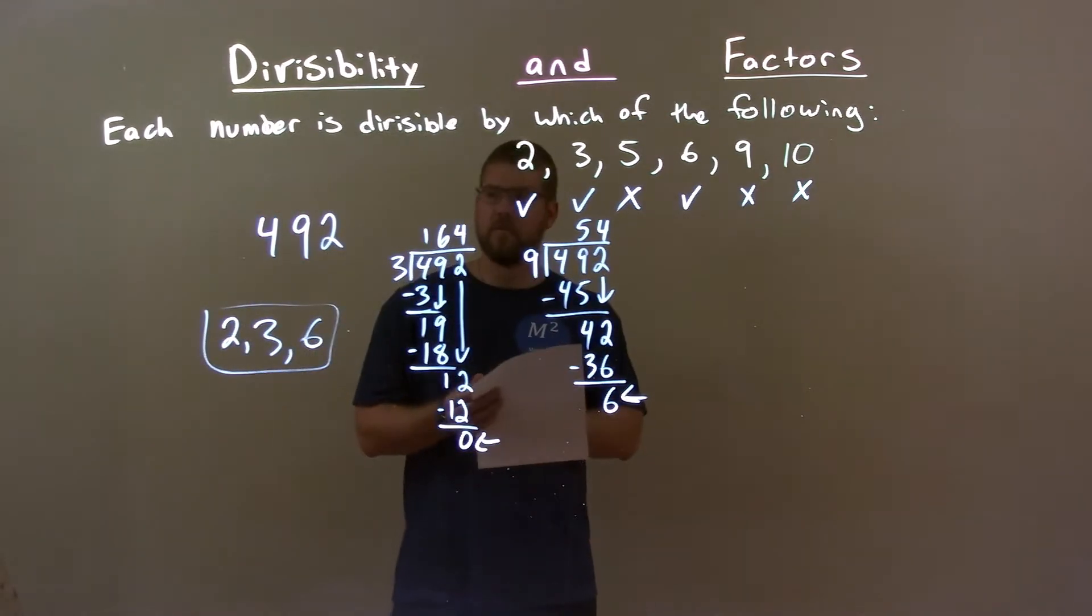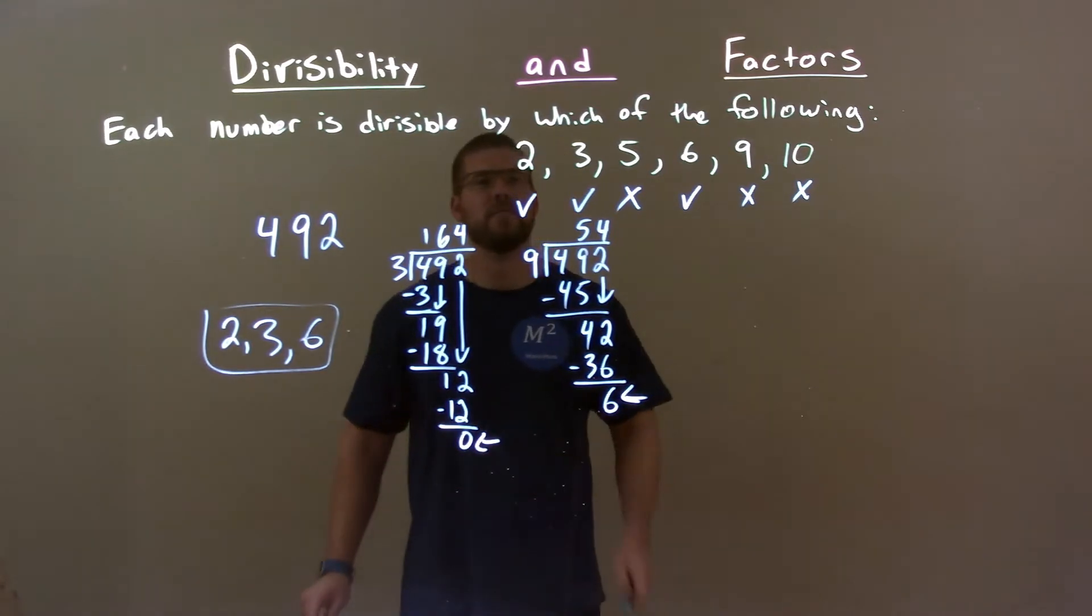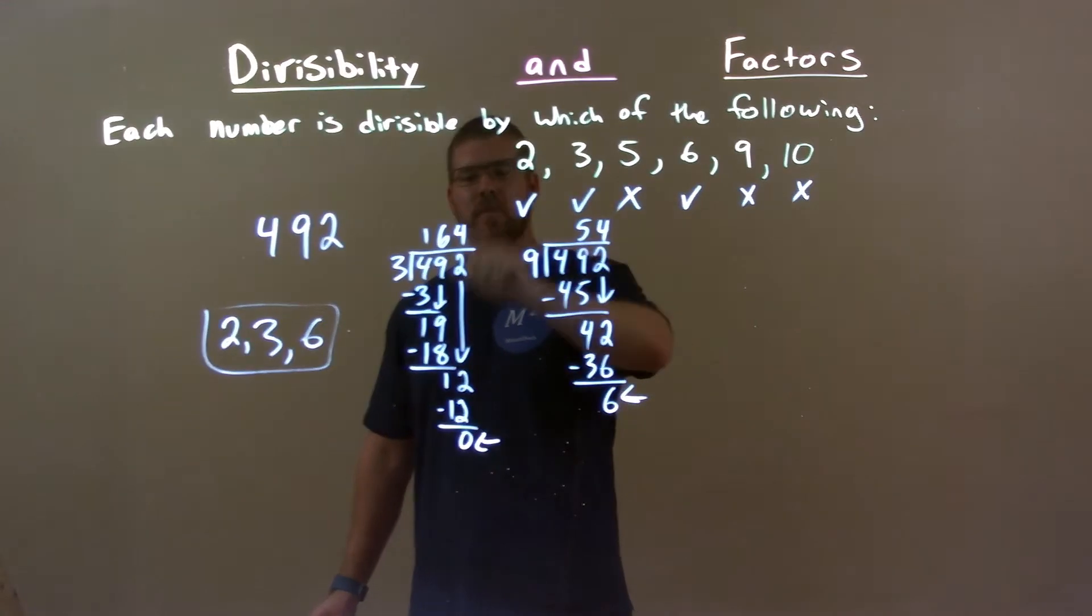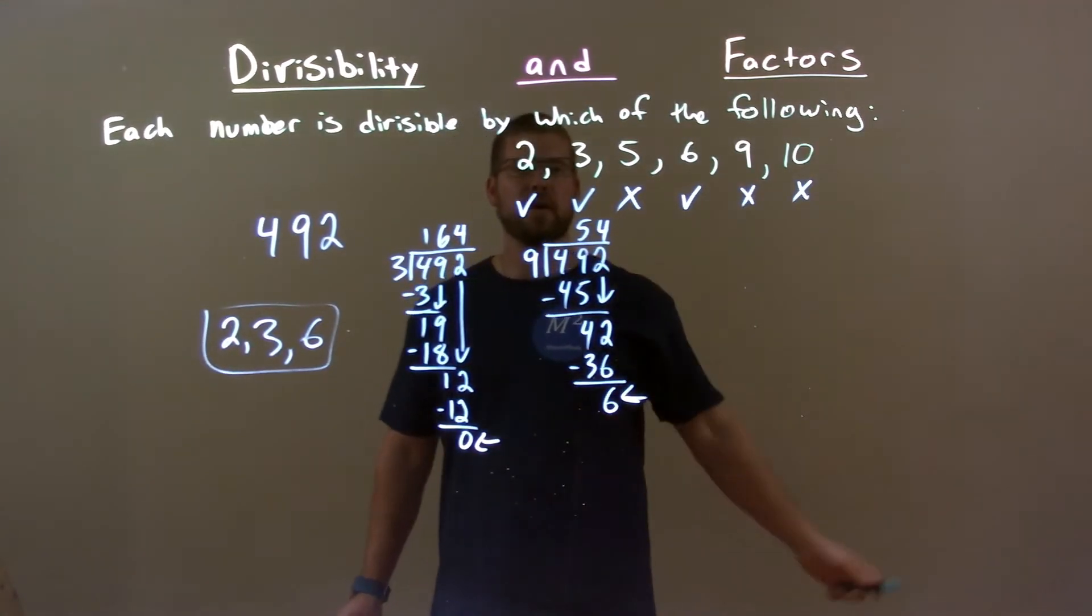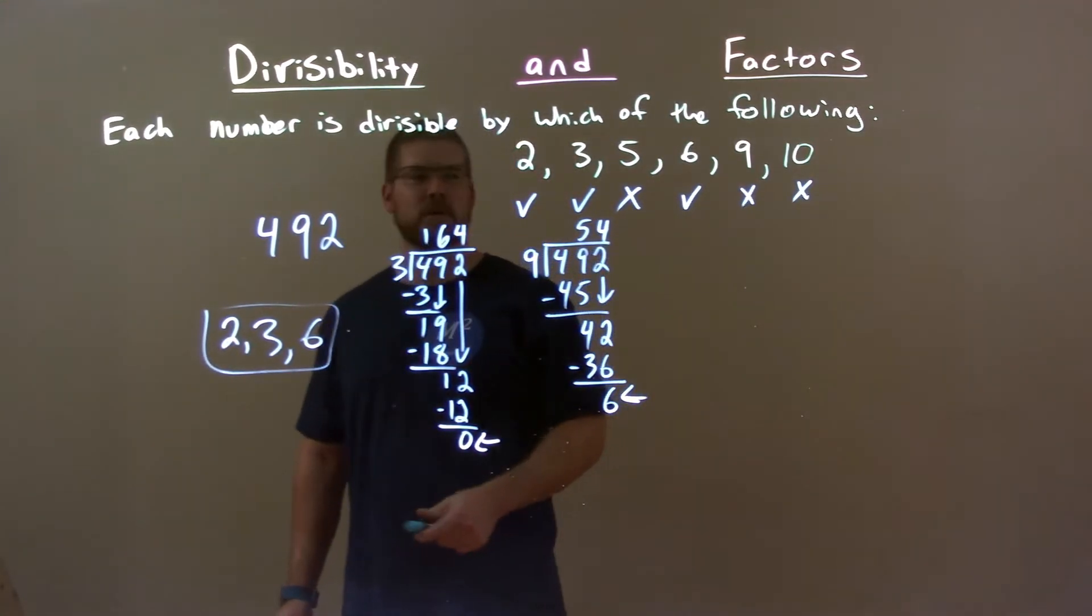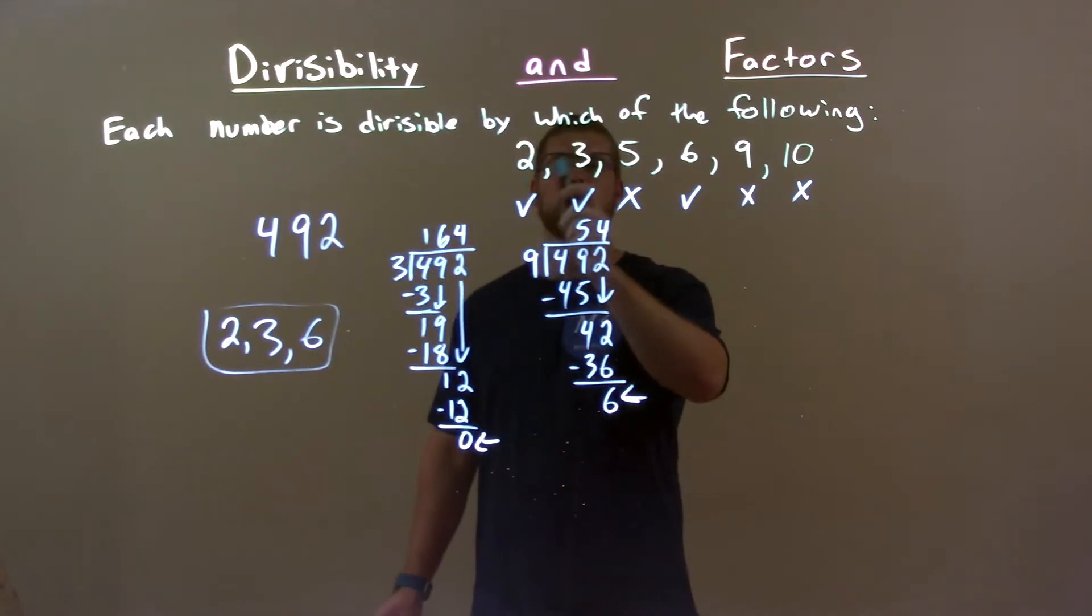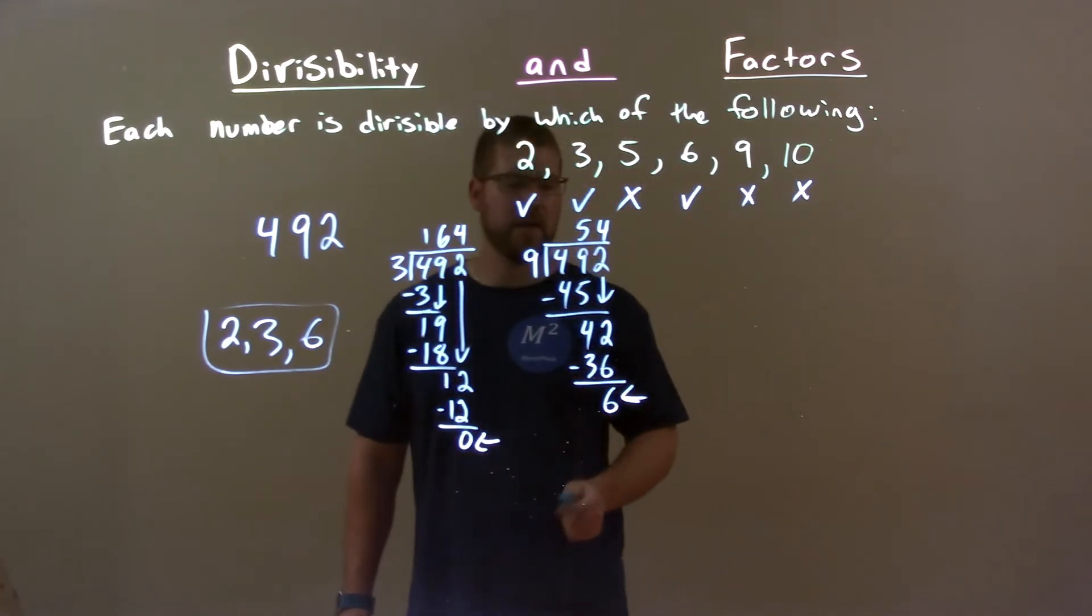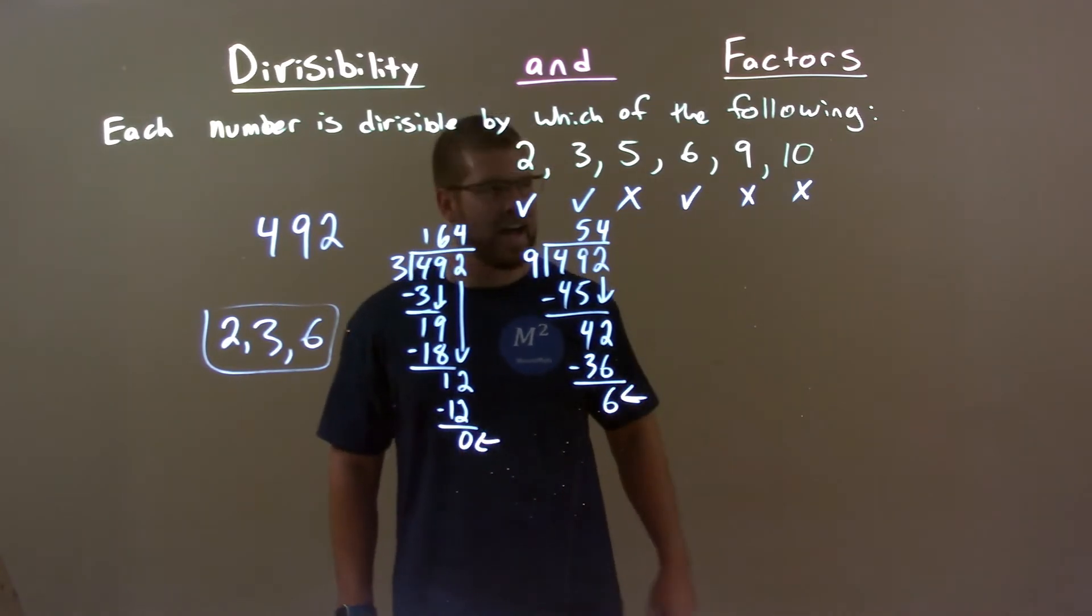Quick recap. We're given 492 and we have to see if one of these numbers go into it. Since 492 is even, 2 works. Since we did long division, remainder of 0, 3 works. Doesn't end in a 5 or a 0. So, 5 is out. 2 and 3 work. So, 6 must also work. Did long division for 9. End in a remainder of 6. So, 9 is out.